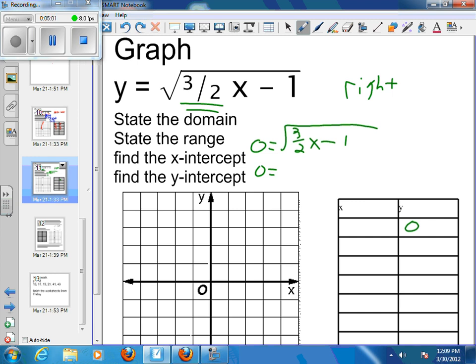So 0 equals the square root of 3 halves x minus 1. When you square both sides, 0 equals 3 halves x minus 1. Add 1 to both sides, so 1 equals 3 halves x. Then you flip and multiply both sides by 2 thirds, and you end up with 2 thirds equals x. That would be our x-intercept. So we're at 2 thirds, which is right about there, and 0. So that's (2/3, 0). We found our x-intercept.